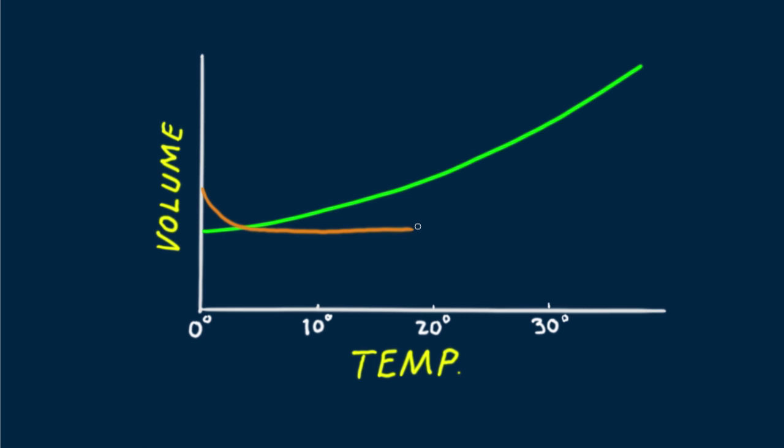Note that at 0 degrees my orange line is higher than the green line. At 0 degrees the ice water is bloated due to the presence of ice crystals. These two processes, thermal expansion and initial contraction, occur at the same time.